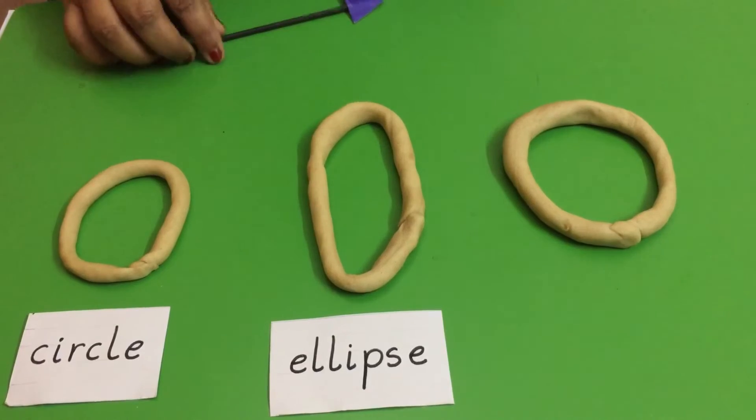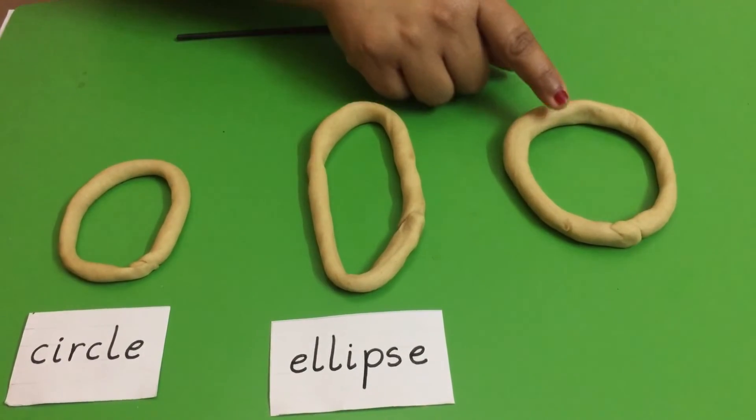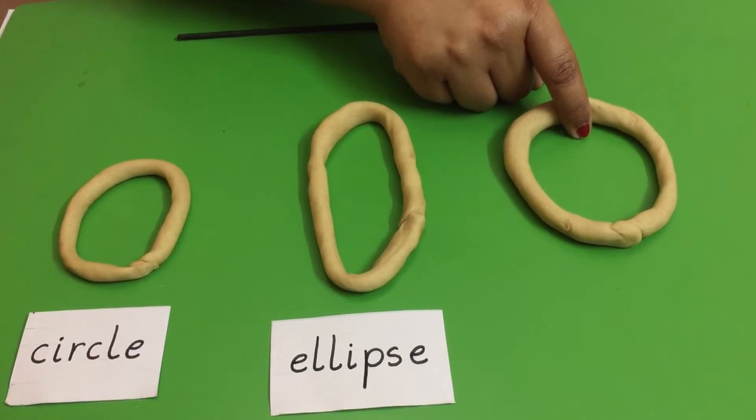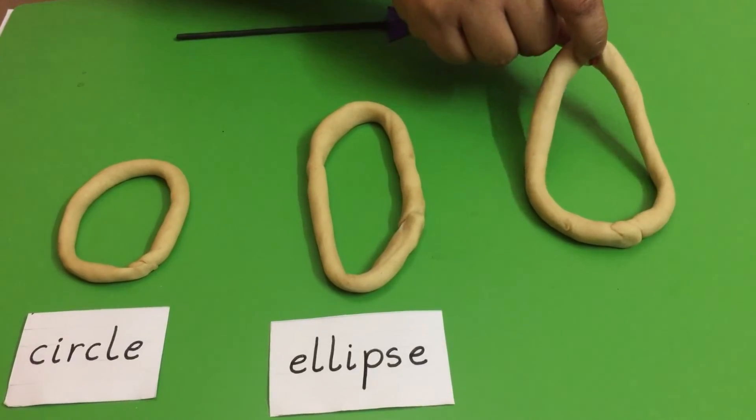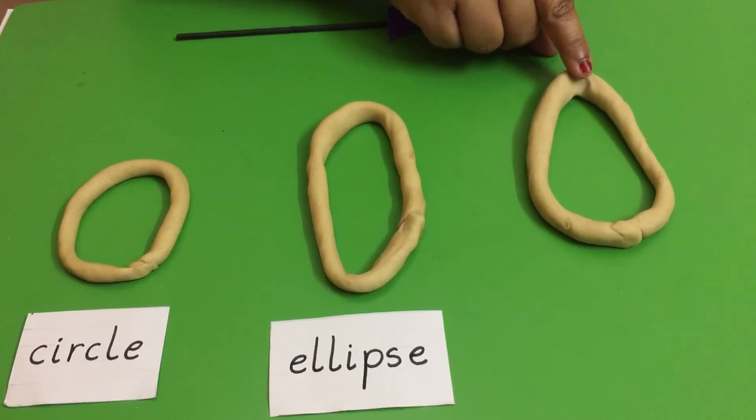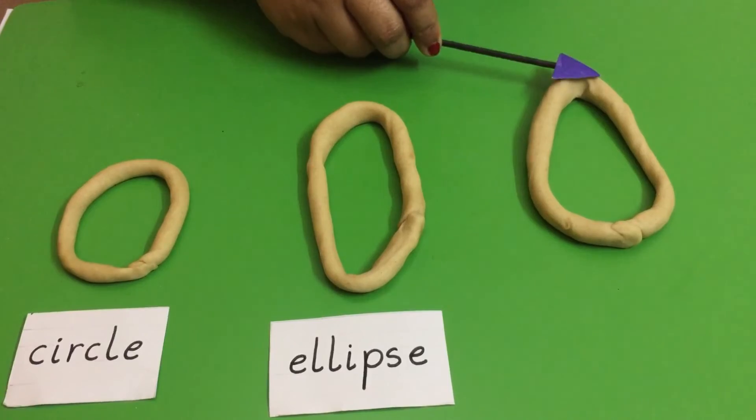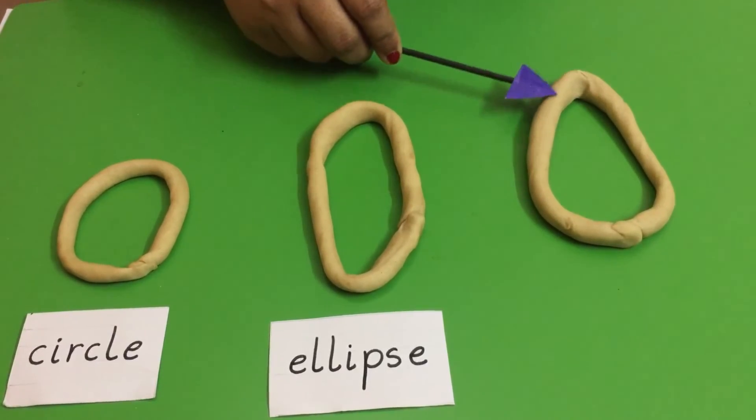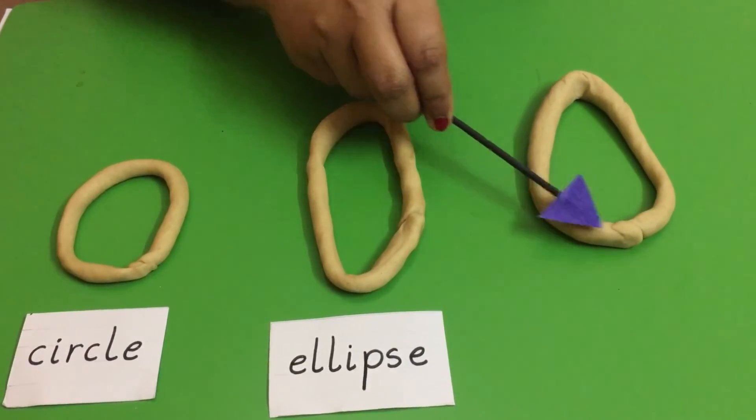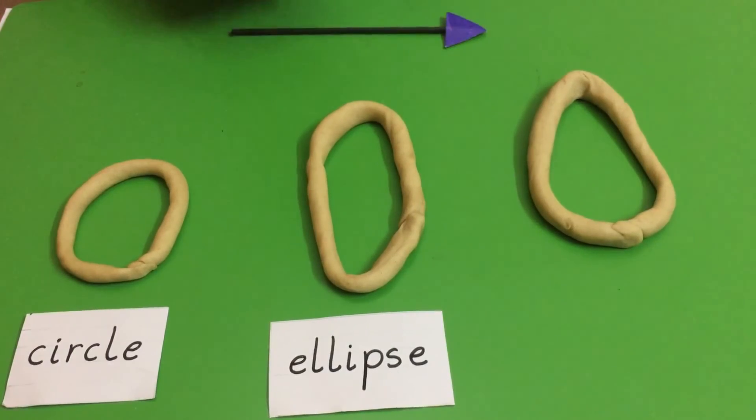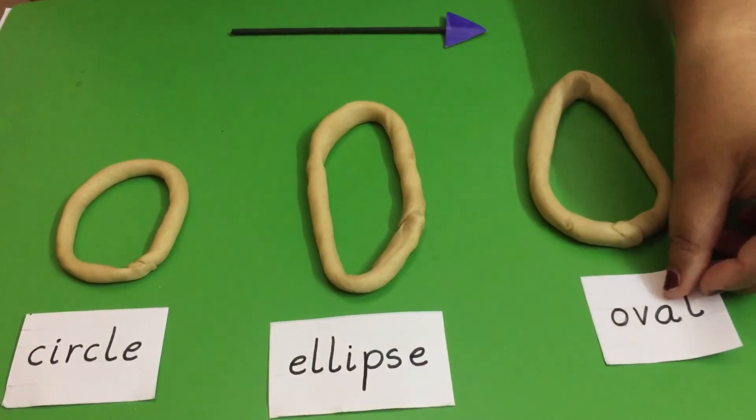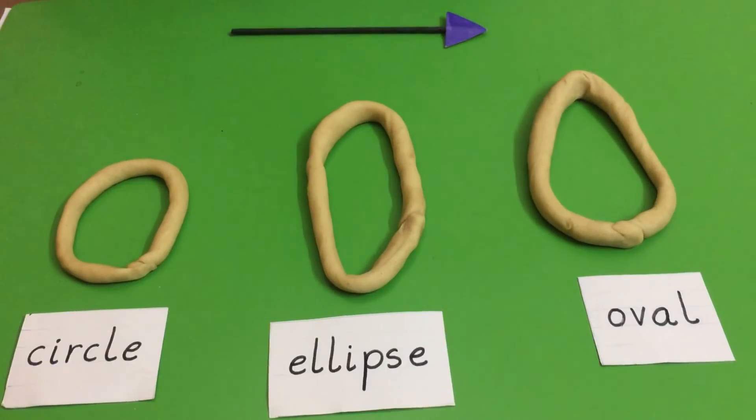In the third circle I am going to stretch only in the top, like this. So an oval has one narrow curved end and one broad curved end. So this is an oval and the word oval looks like this.